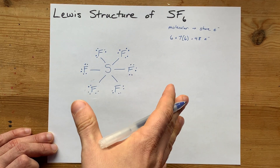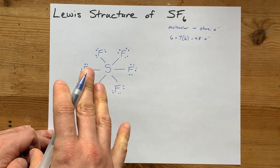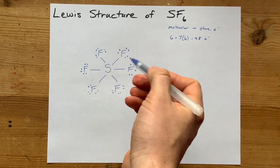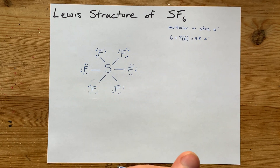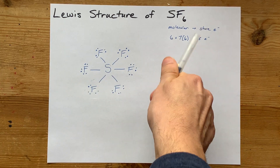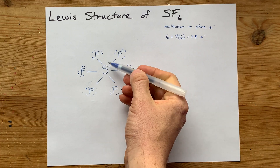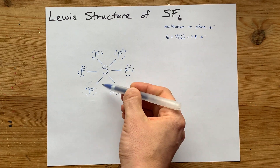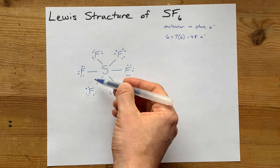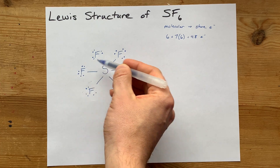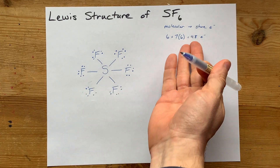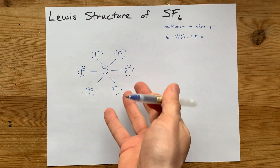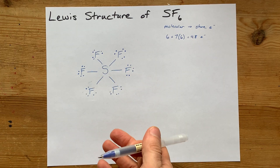Now I really should have been counting, because sometimes you're going to run out of electrons before you fill the octets on the outer atoms. I need 48 total. Counting up: 8, 16, 24, 32, 40, 48. I have the 48 that I need, so I'm not going to add any more or take any away.